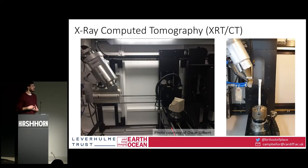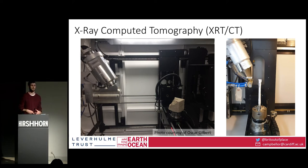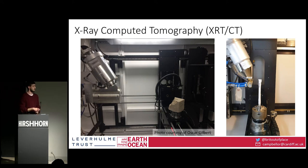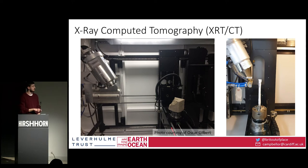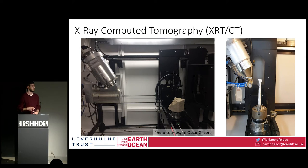Now we've looked at what the fractures do on the surface, we can use CT scanning — X-ray computed tomography — to look at what those fractures are doing inside our blocks. The way this works is you pass X-rays through your sample and the energy of that X-ray is absorbed differentially based on the elements and minerals present. Air doesn't really absorb X-rays, so it appears dark in the images. We looked at two scales: a full block scan to look at the macro fractures — the open-aperture fractures visible on the surface.